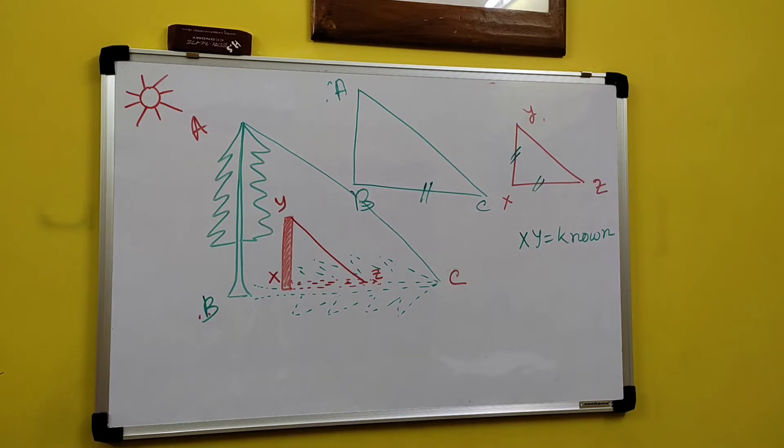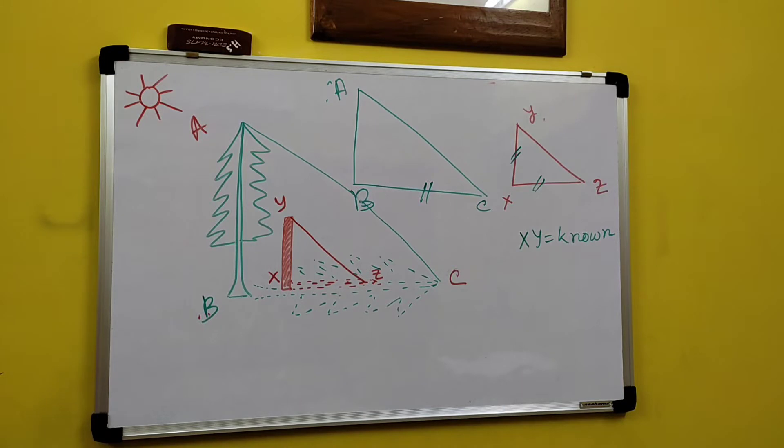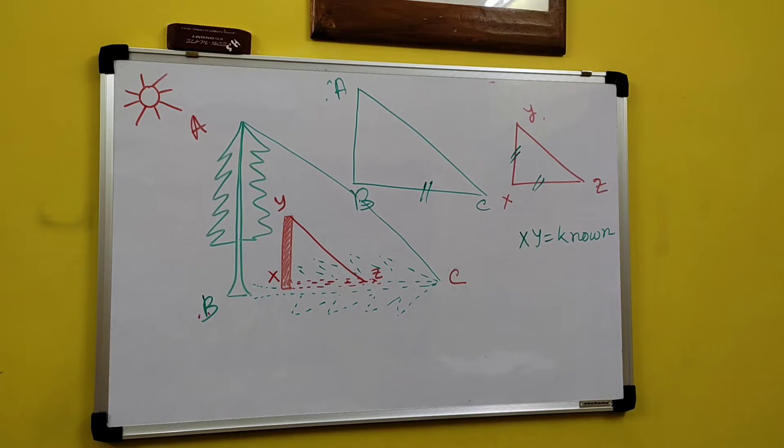Now see, since you are reading in class 9, right now you haven't studied. But you have a theorem in geometry that is called similarity theorem. What is the statement of this theorem? If two triangles are similar, then the ratio of their sides also will be equal.